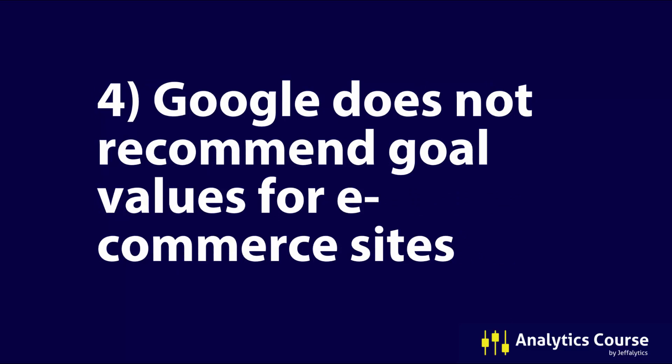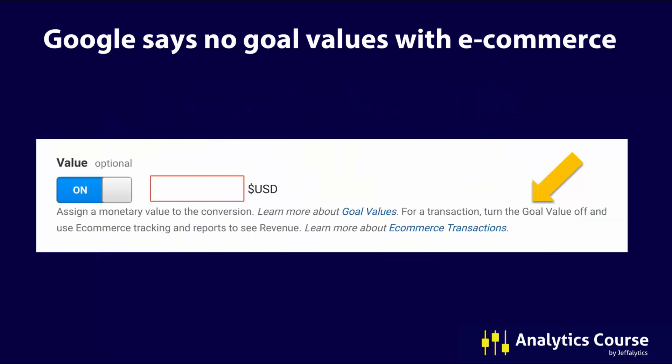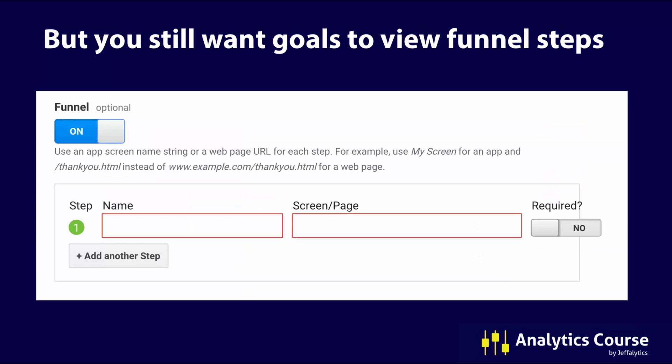Number four: Google does not recommend goal values for e-commerce sites. You can look in their documentation — they say for a transaction, turn the goal value off and use e-commerce tracking and reports to see revenue instead. So Google's telling you, don't do this for e-commerce. I'd recommend turning the goal value off, but you do want to turn your funnel on so you can view the funnel steps. We do set them up inside of Analytics Course and show you exactly how these funnels work, but for the purpose of this video, we're talking about goal values and not funnels.